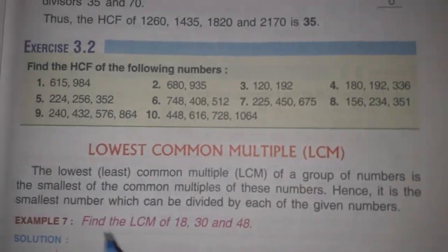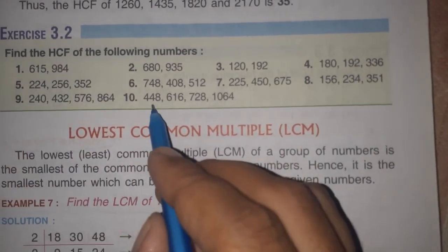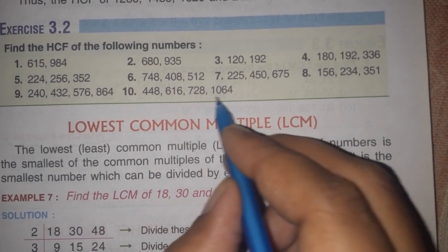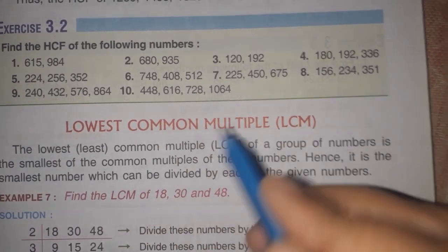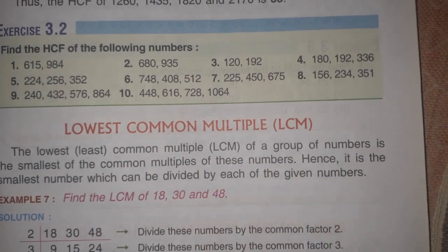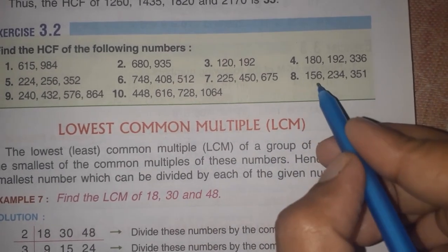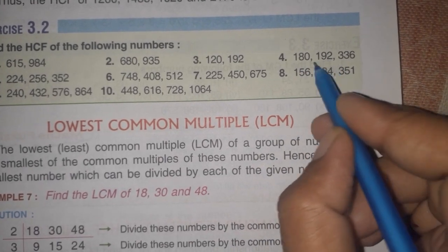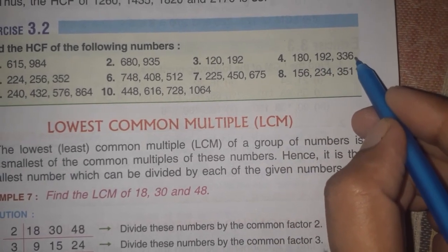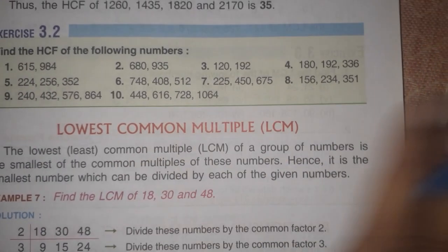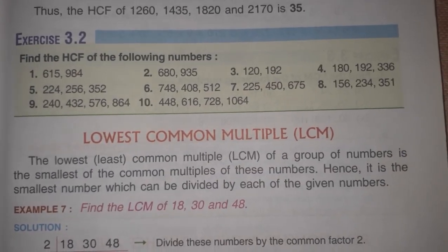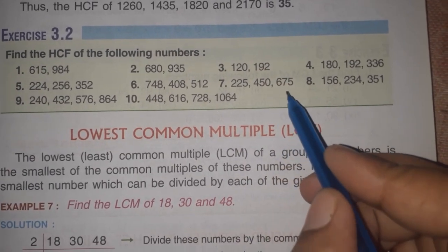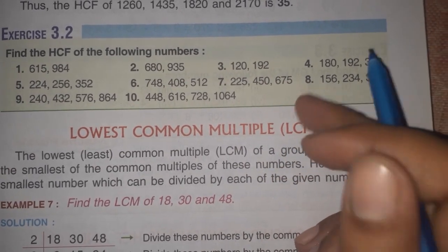In the same way as I explained question number 9, for question number 10 also first find the SCF of the first two numbers, then find the SCF of the next two numbers, and then find the SCF of both those results to get the final answer. If three numbers are given, find the SCF of the first two, and then find the SCF of that result with the third number to get your required answer.